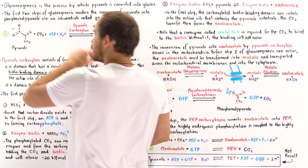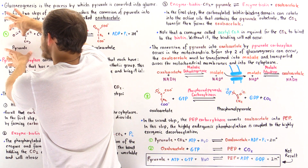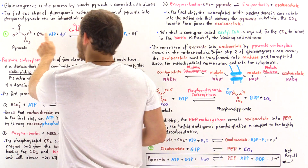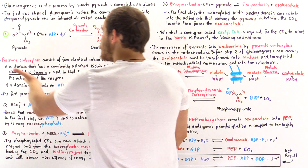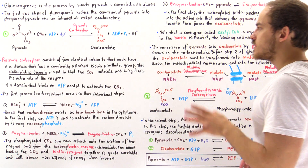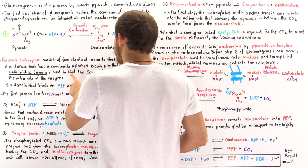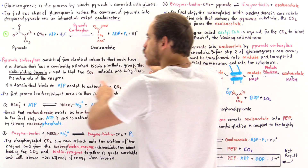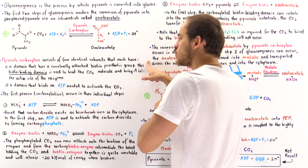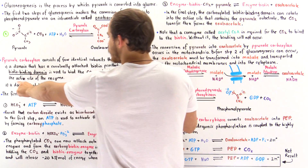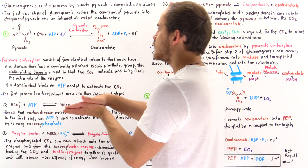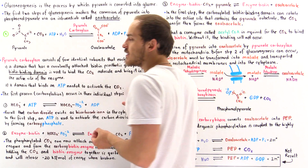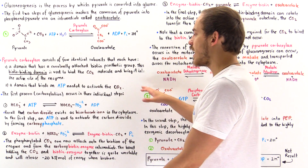We have to activate the CO2 because simply attaching it would require an input of energy. Pyruvate carboxylase consists of four identical subunits that each have a domain with a covalently attached biotin prosthetic group — this helper group binds the CO2 and brings it into the active site of the enzyme where the pyruvate is located. There is also the domain that binds the ATP molecule, which is used to make that carbon dioxide much more reactive.